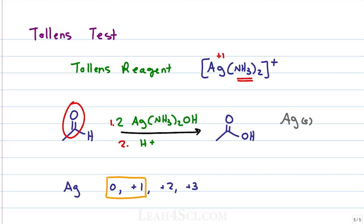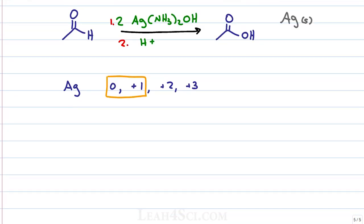And when the aldehyde is oxidized, the silver is reduced in the following half reaction. We have Ag plus grabs one electron to give us Ag0.